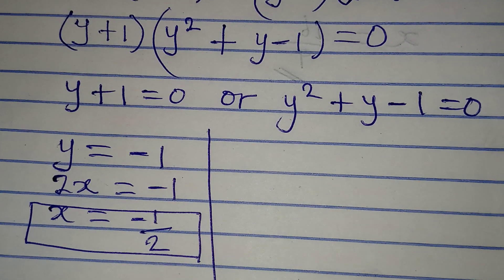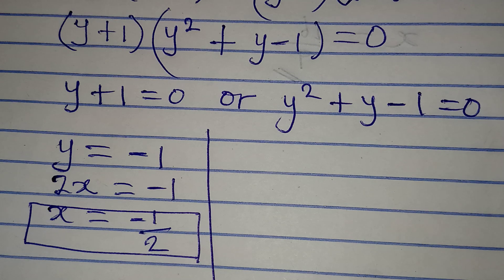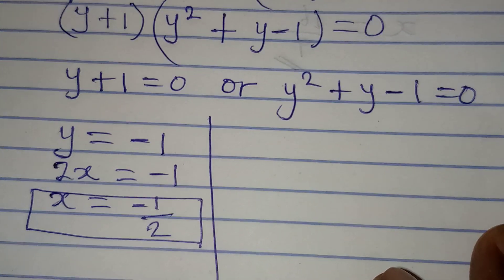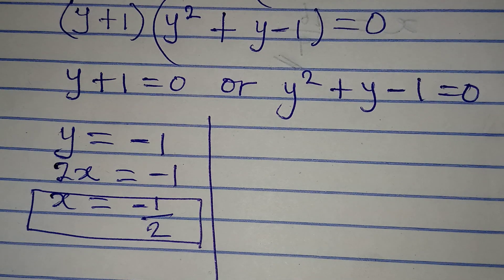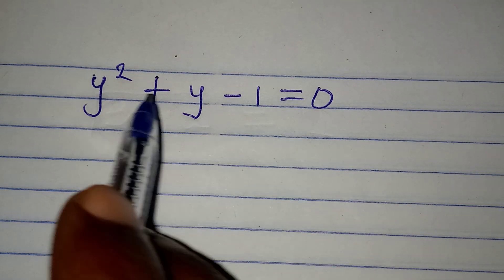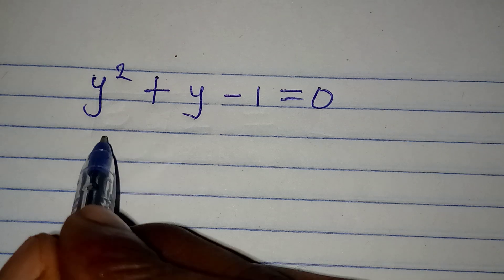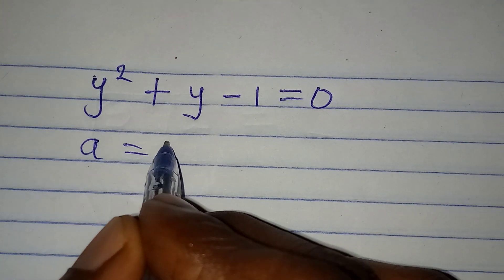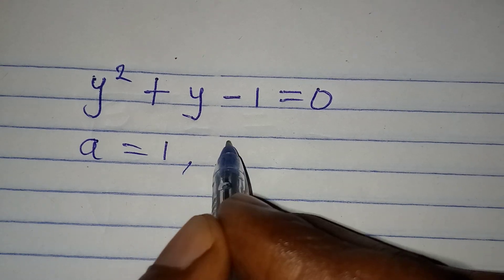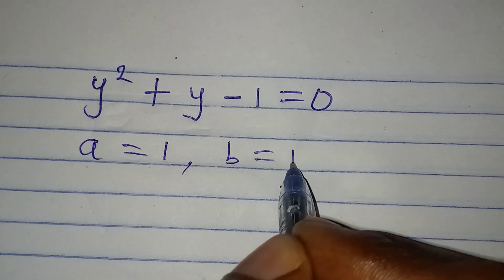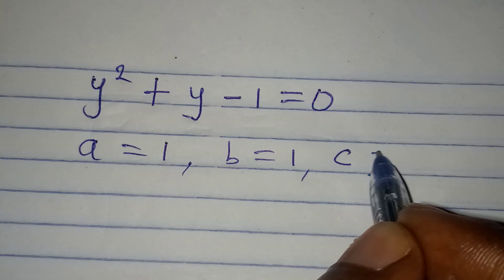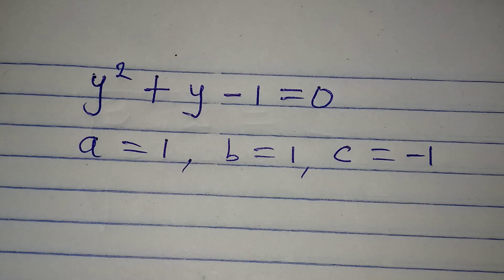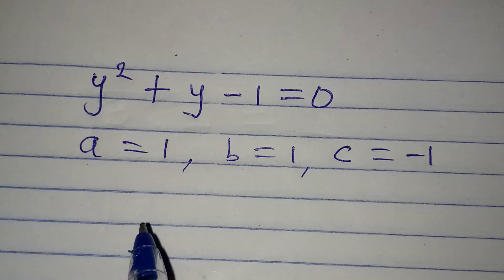If we go to the right, this is a quadratic equation and we can solve it using the formula method. From this equation, we have a equal to 1, b equal to 1, and c equal to minus 1. We are going to get our quadratic formula now.